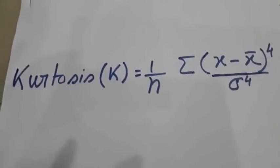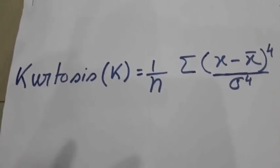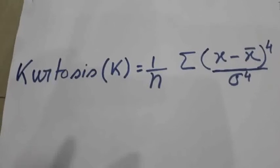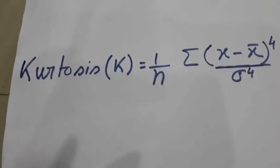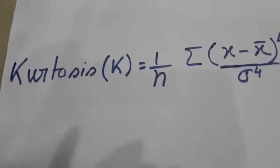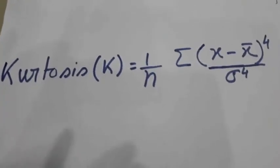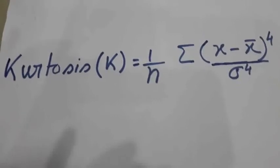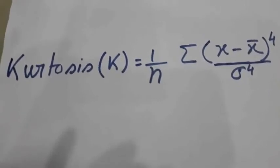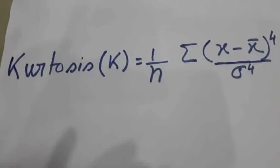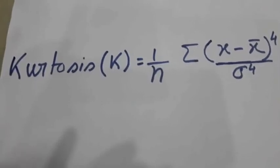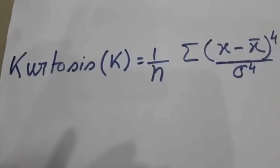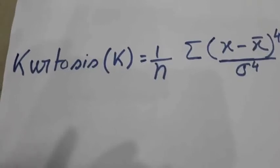x minus x bar whole four by sigma to the fourth. Here all the terms have the usual meaning: x equals the value of the observation, n equals the number of observations, x bar equals the mean of the observation, and sigma equals the standard deviation.